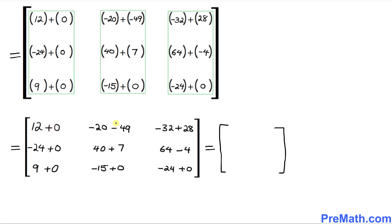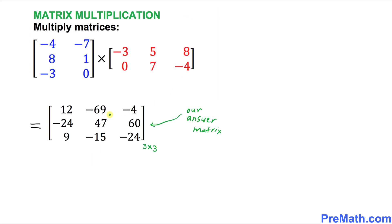Adding the values: 12 plus zero is 12. The next entries work out to negative 69, negative 4, negative 24, 47, 69, negative 15, and negative 24. That is our answer matrix, which has three rows and three columns.